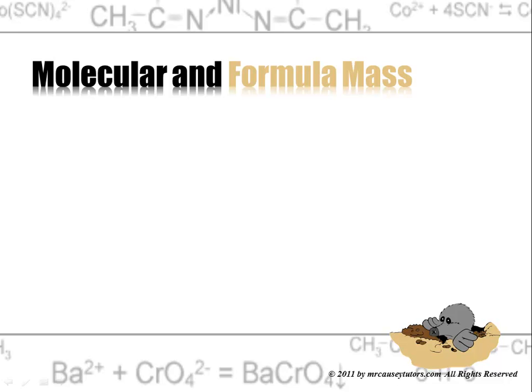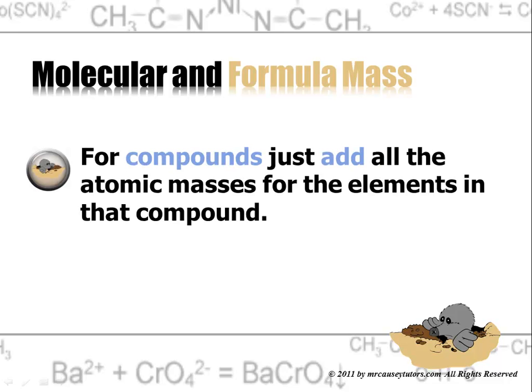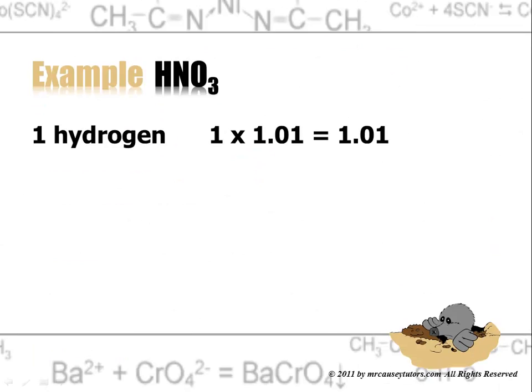For compounds just add all the atomic masses for the elements in that compound. Just add them together. Here's an example. And in this example we have HNO3 which is nitric acid.